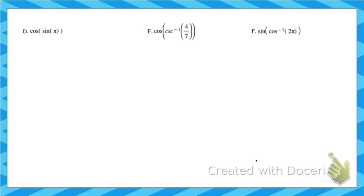This next one is a little tricky. Start with the inside — there are no inverses here, so just read carefully. The sine of pi: what's the y-coordinate at the angle pi? When you go to pi, the y-coordinate is 0. Now we're doing the cosine of 0: go to the radian value of 0 and find the x-coordinate. The x-coordinate at 0 is 1.